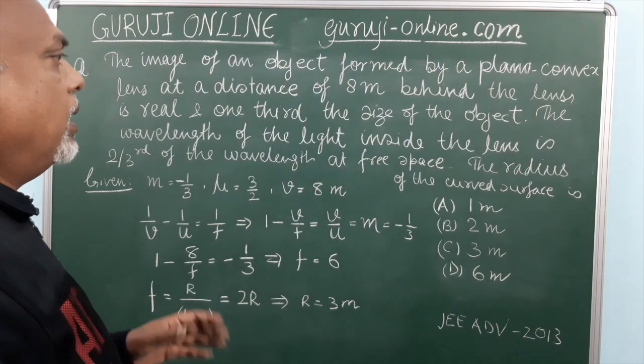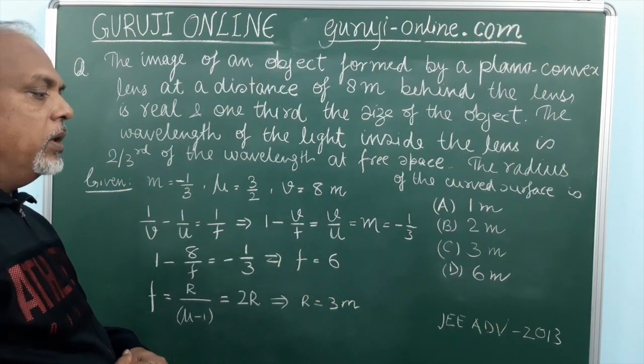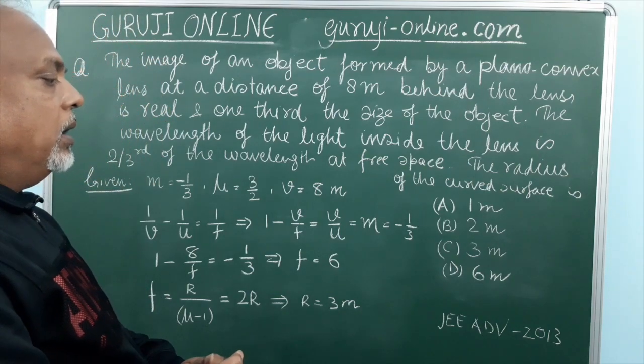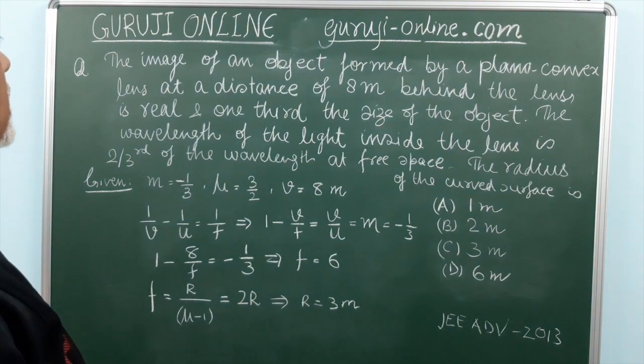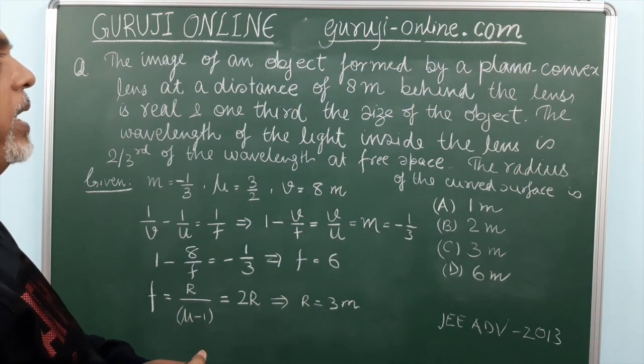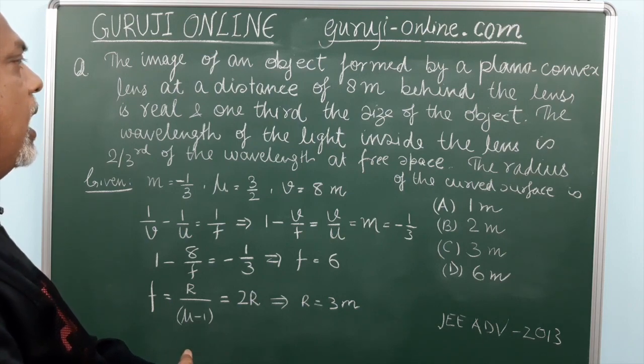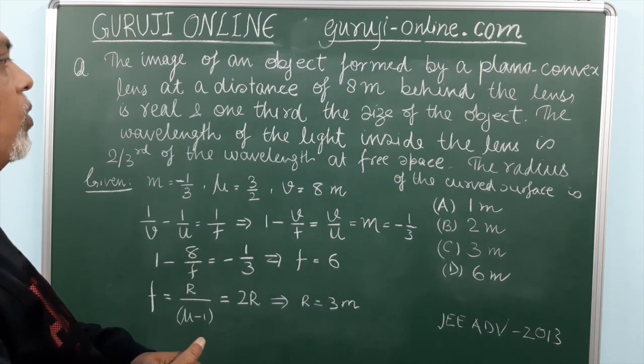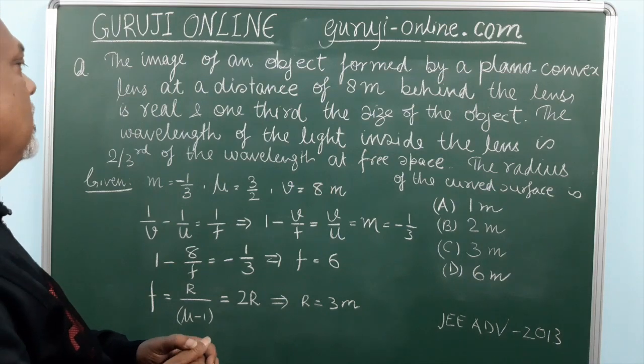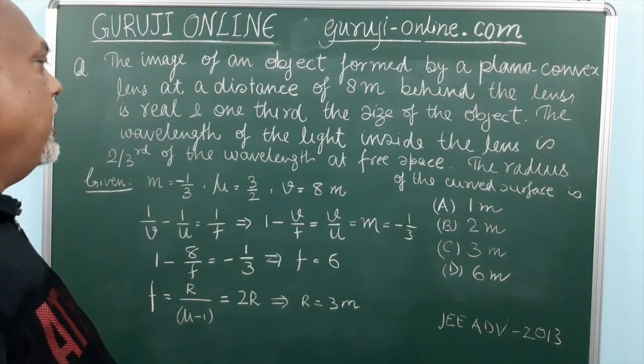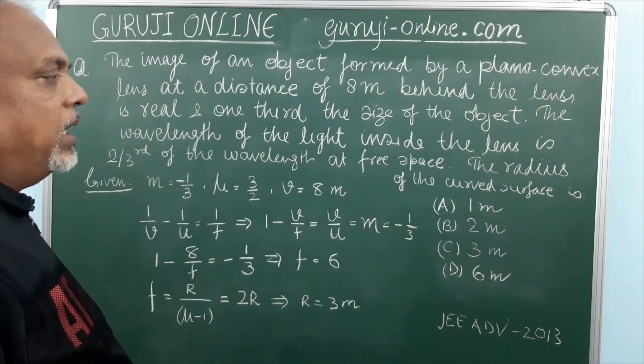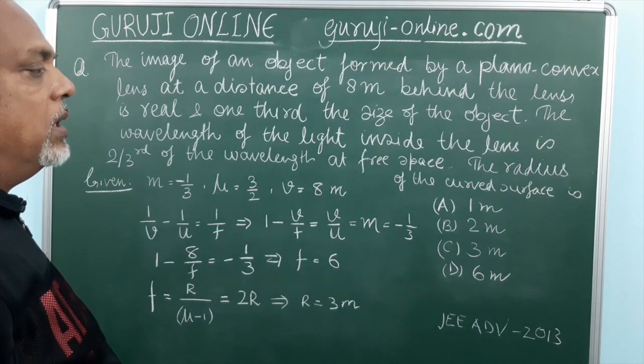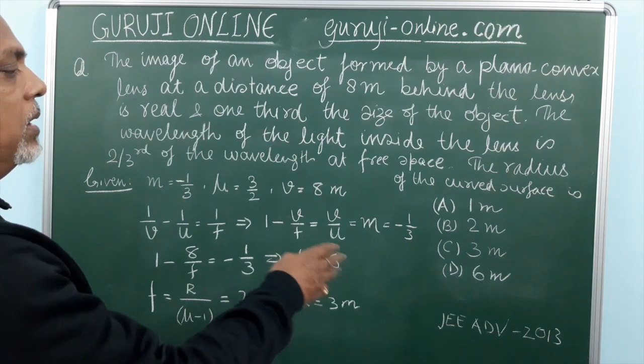So let us see this problem. This problem has also come in JEE Advanced 2013. This problem is like this: The image of an object formed by a plano-convex lens at distance of 8 meters behind the lens is real and one third the size of the object. The wavelength of the light inside the lens is 2 by third of the wavelength at free space. So we have to find out the radius of the curved surface and we have these options.